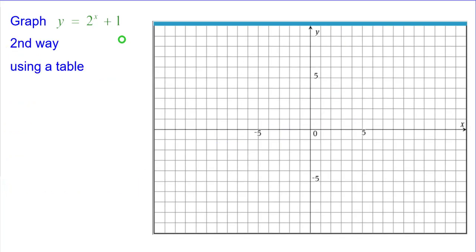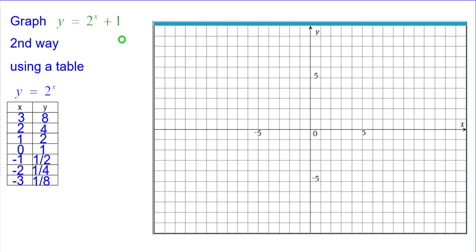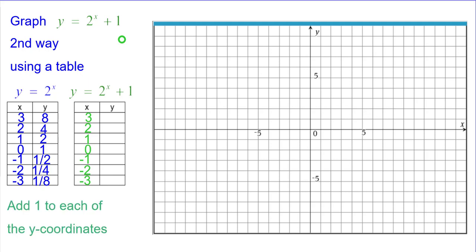A second way would be using a table, and we're going to use these seven points from the y equals 2 to the x table. To create the table, we're going to add 1 to each of the y coordinates. And so 8 plus 1 is 9, so we'll plot 3, 9. 4 plus 1 is 5, plot 2, 5.